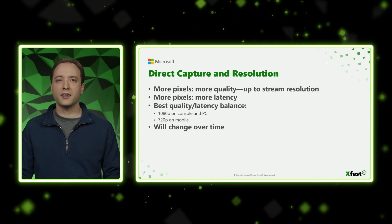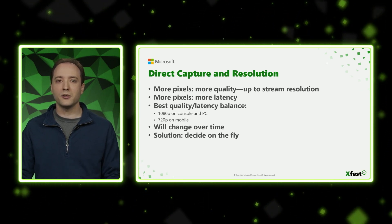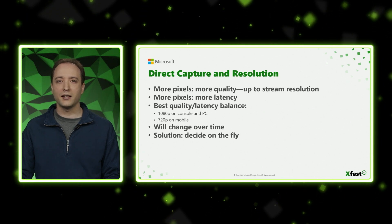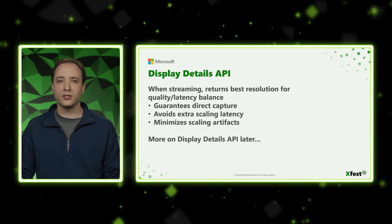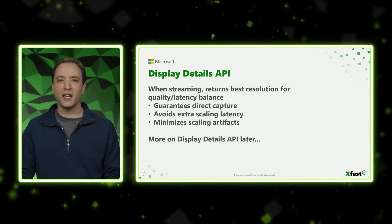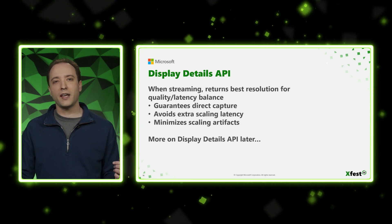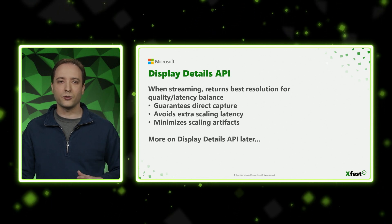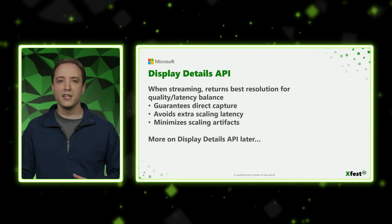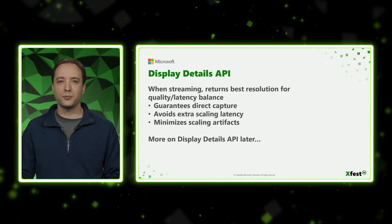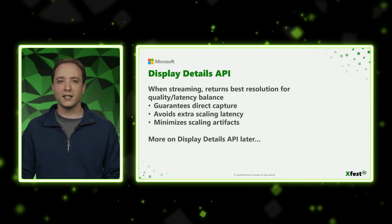The solution that we'd like to provide to you is give you the ability to decide on the fly. The way we're going to do that is with the Display Details API — this is something that we've been working on. When you're streaming, it returns the best resolution for a quality-latency balance. What I mean by that is it's going to guarantee direct capture, avoid any extra scaling latency, and minimize scaling artifacts. We'll have more on the Display Details API a little bit later.